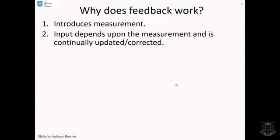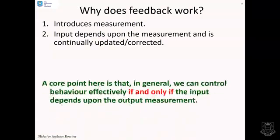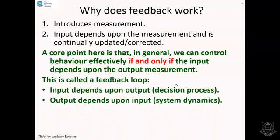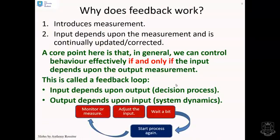Why does feedback work? The key thing is feedback introduces measurement. The input depends upon the measurement and is continually updated and corrected. We measure: am I in the right place? Yes, do nothing. No, change the input. A core point here is that in general, we can control behavior effectively if and only if the input depends upon the output measurement. This is called a feedback loop because the input depends upon the output—that's our decision process—and the output depends upon the input through the system dynamics. You can see it's a loop. We've got this interdependence between the inputs and the outputs.